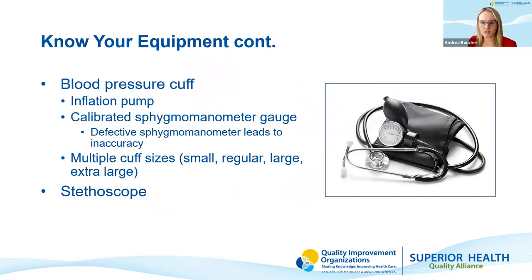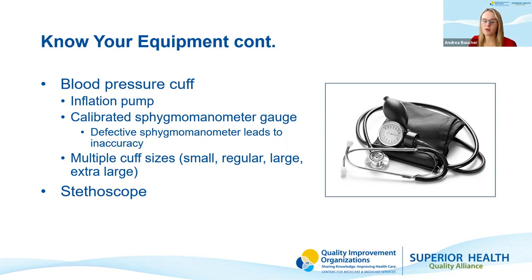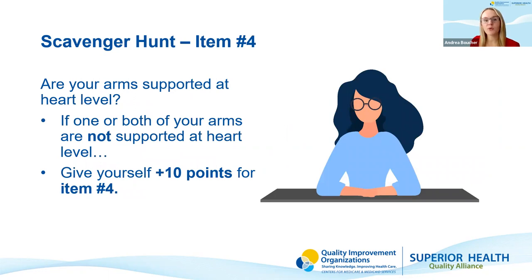Knowing the components of a blood pressure device: for manual devices, you'll need the inflation system — the cuff, the inflatable bladder inside the cuff, the inflation pump, and the pressure control valve — as well as a calibrated sphygmomanometer gauge. A defective gauge could lead to inaccuracy, so make sure the device is calibrated before taking any measurements. You also want a few different cuff sizes, ranging from pediatric to extra-large and thigh cuffs, and a stethoscope if using the manual method. Scavenger hunt item number four: are your arms supported at heart level? If not, give yourself 10 points for item number four.